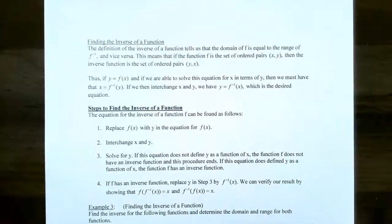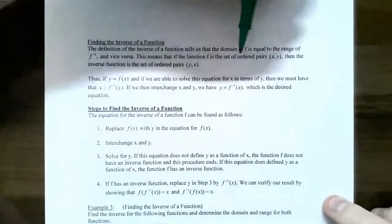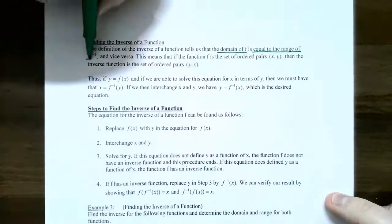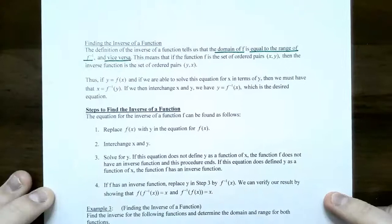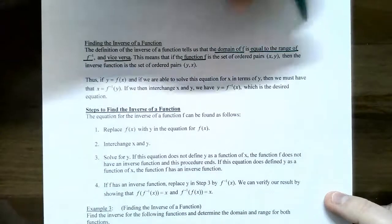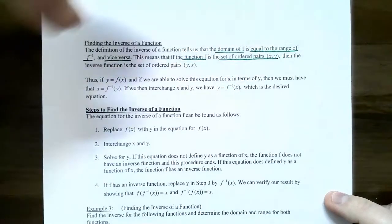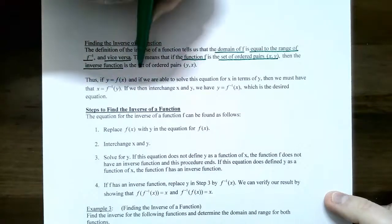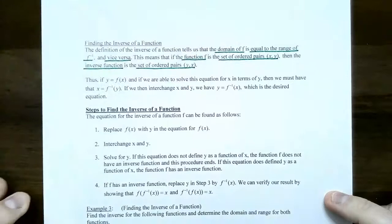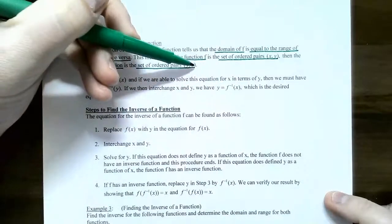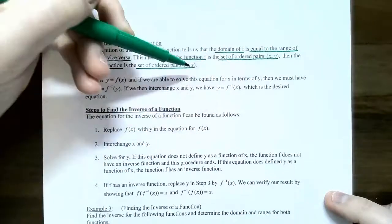So let's talk about how to find an inverse function. The definition of the inverse function tells us that the domain of the function f is equal to the range of the inverse, and vice versa. This gives us the idea of how to actually find the inverse function. If you have a function f as a set of ordered pairs x comma y, then the inverse function will be a set of ordered pairs where the x-coordinate and y-coordinate are reversed.